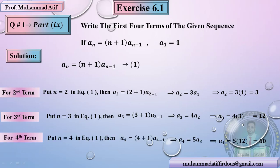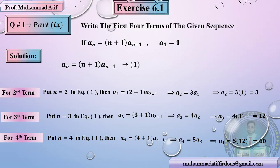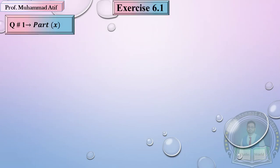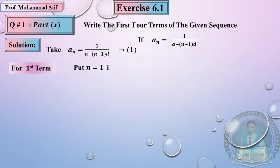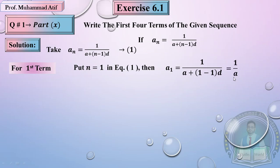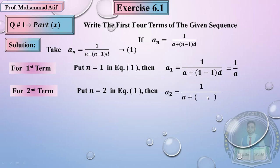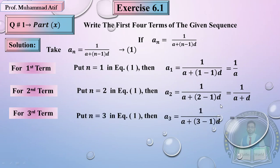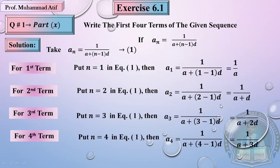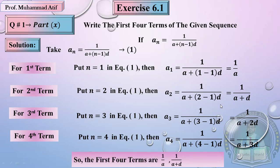Similarly, put n = 4 and the remaining answers come out as 3, 12, and 16. In a similar fashion, for the 1/(a+d) form: put n = 2 to get 1/(a+d), put n = 3 to get 1/(a+2d), and put n = 4 to get 1/(a+3d). So you have all four terms. I tried to cover this first part so that you understand the method.